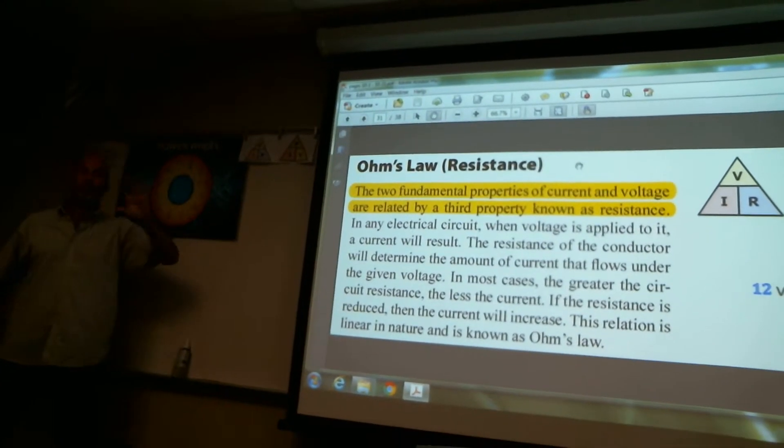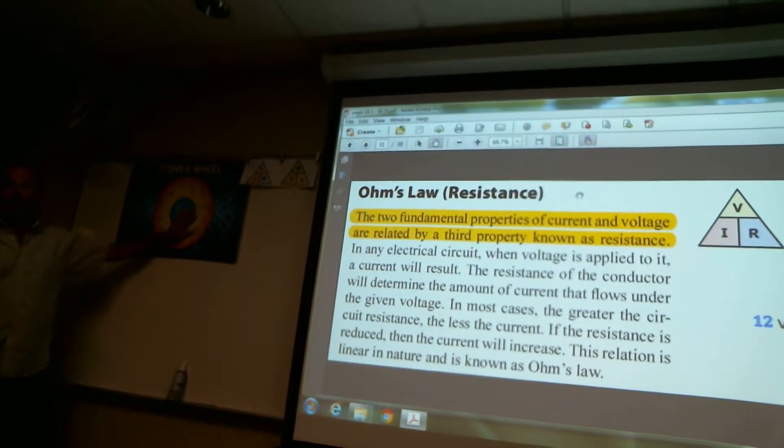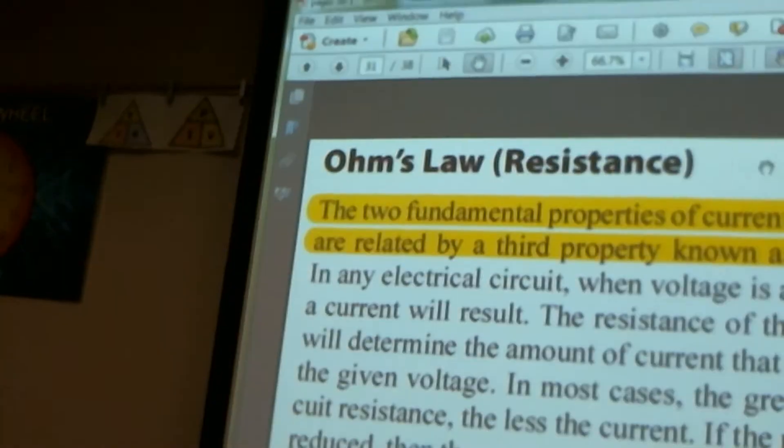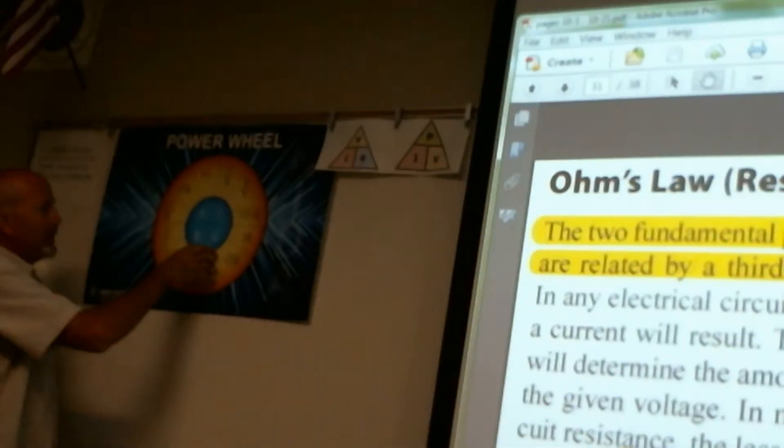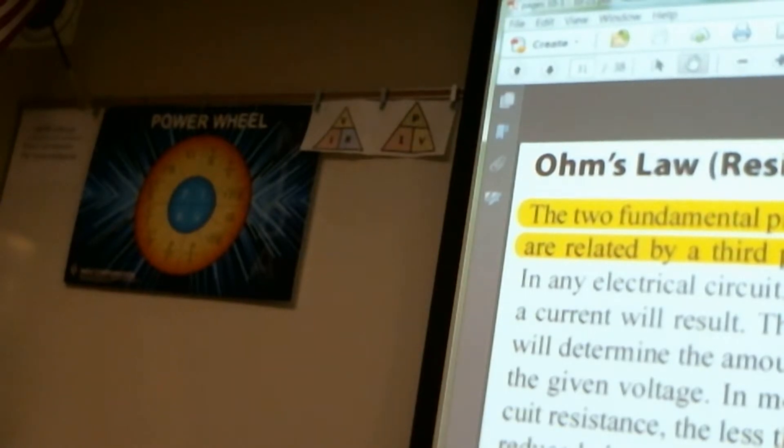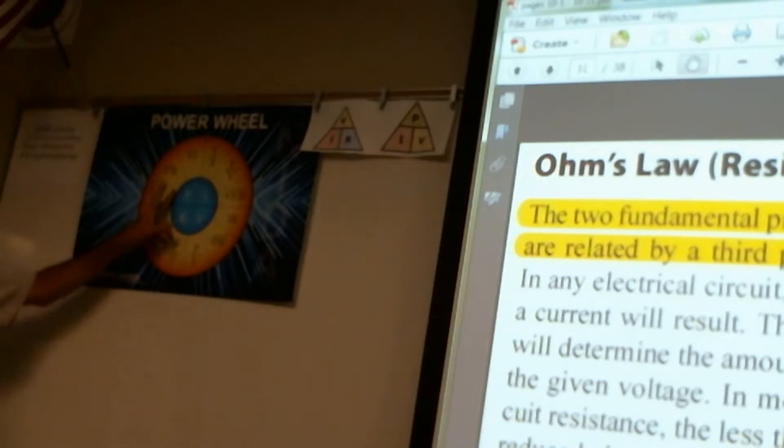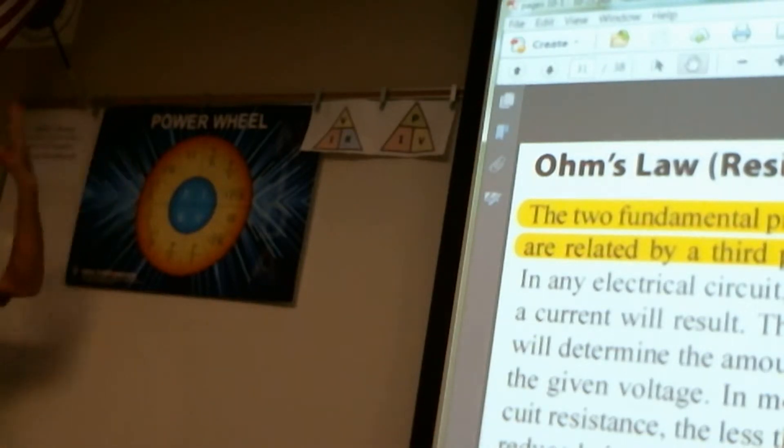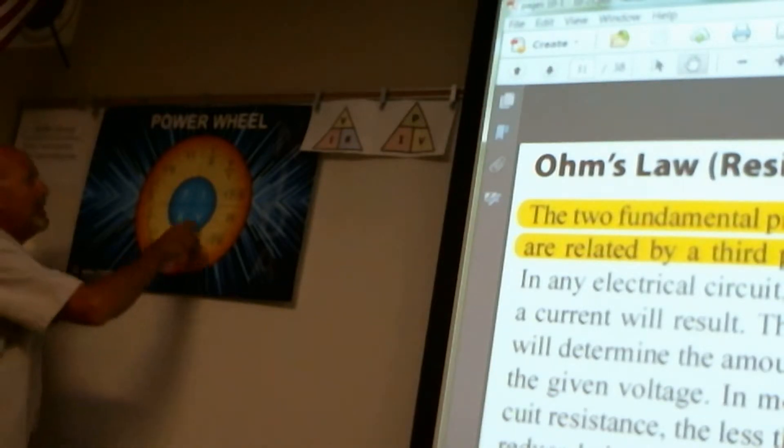Two triangles will give you all of this information. We're working with four pieces of information: power which is measured in watts, current which is measured in amps, resistance which is measured in ohms, and volts. So we really have four pieces of information we're manipulating.